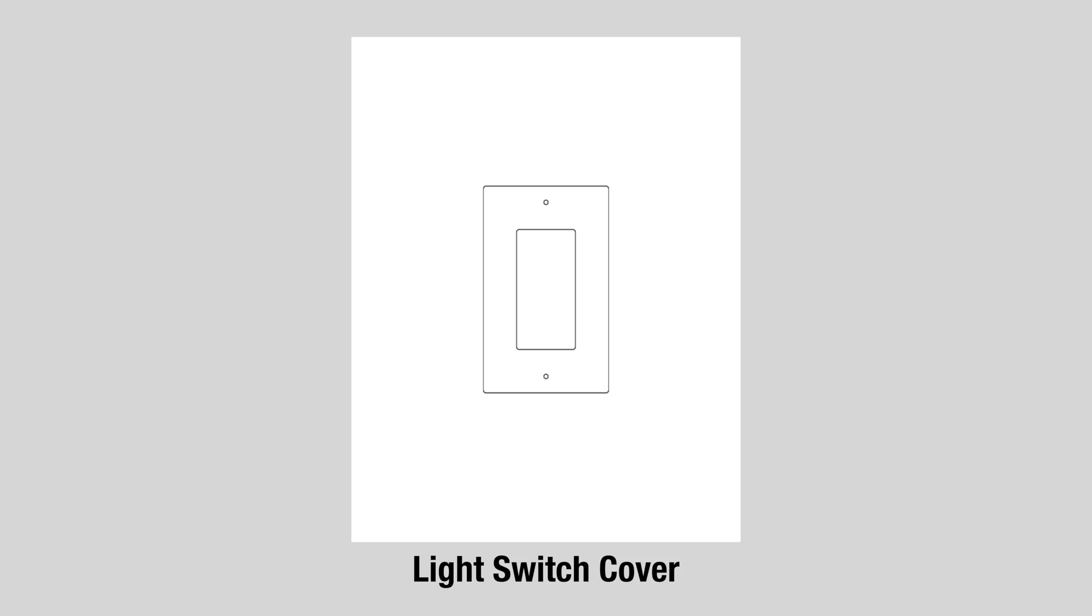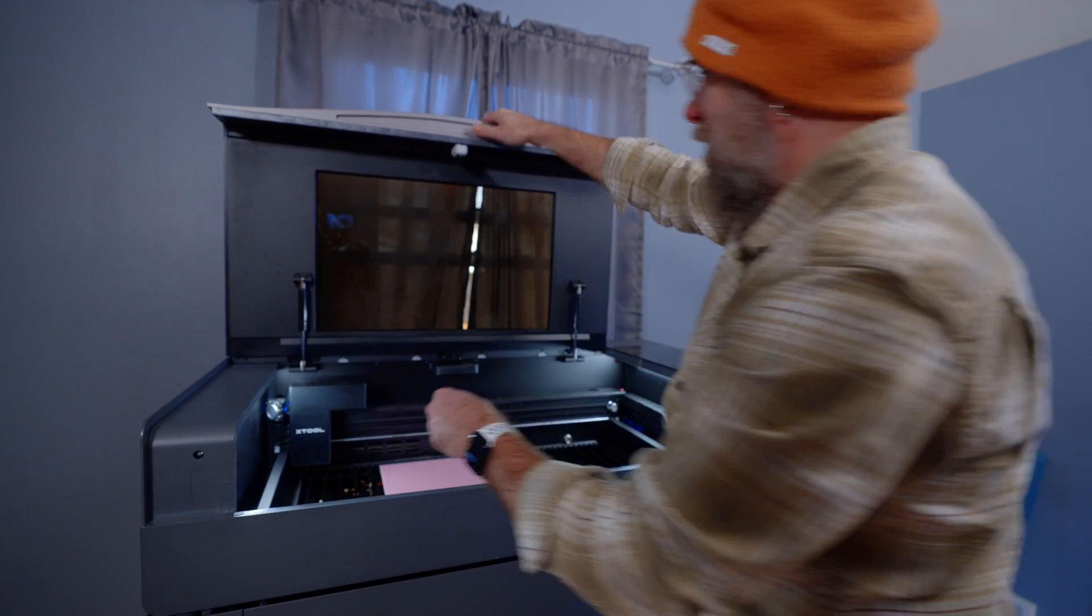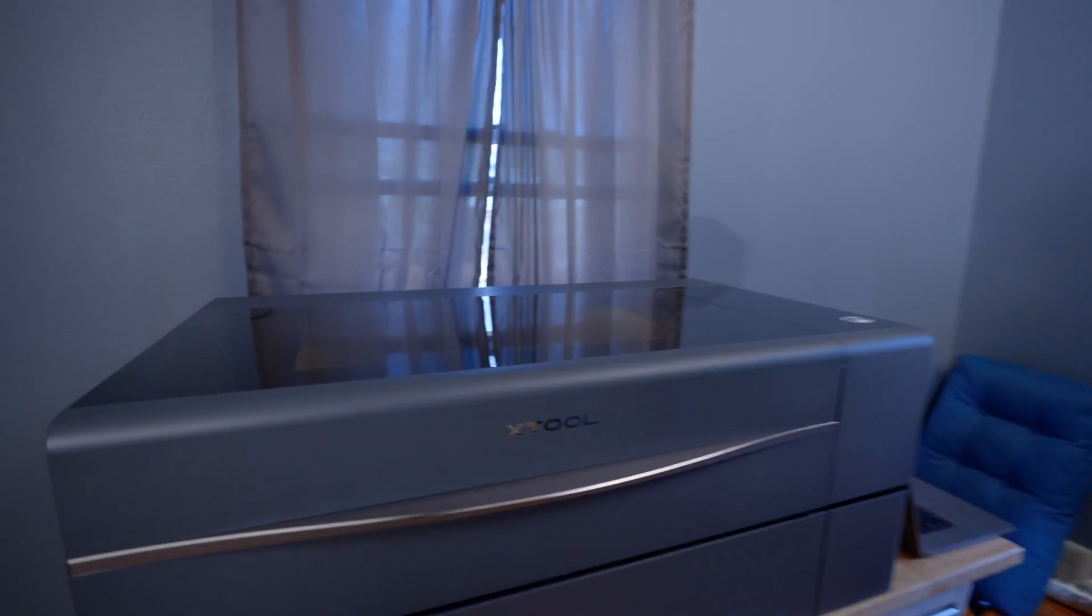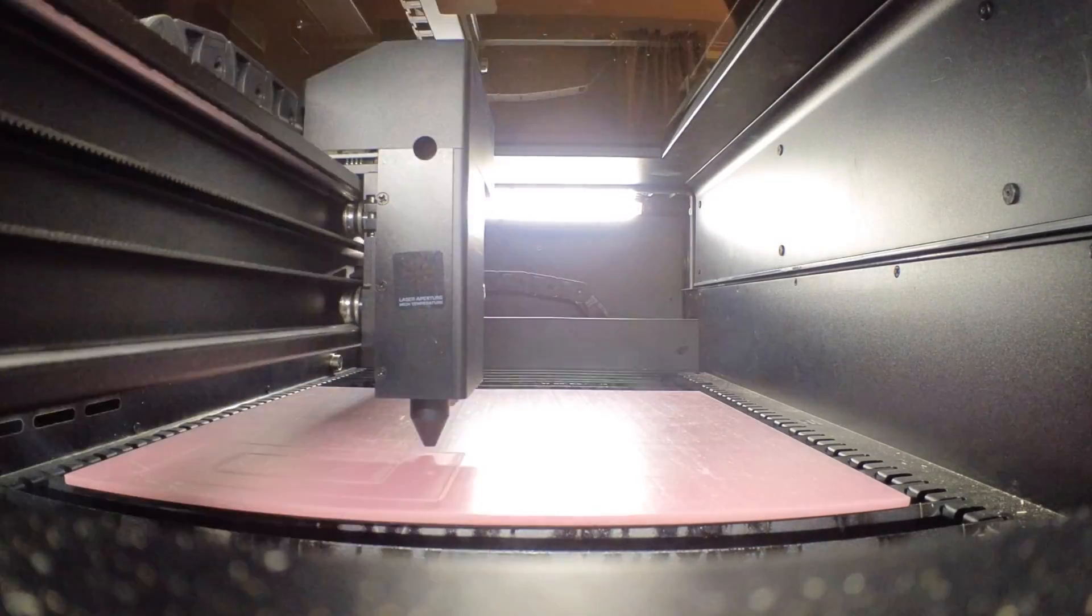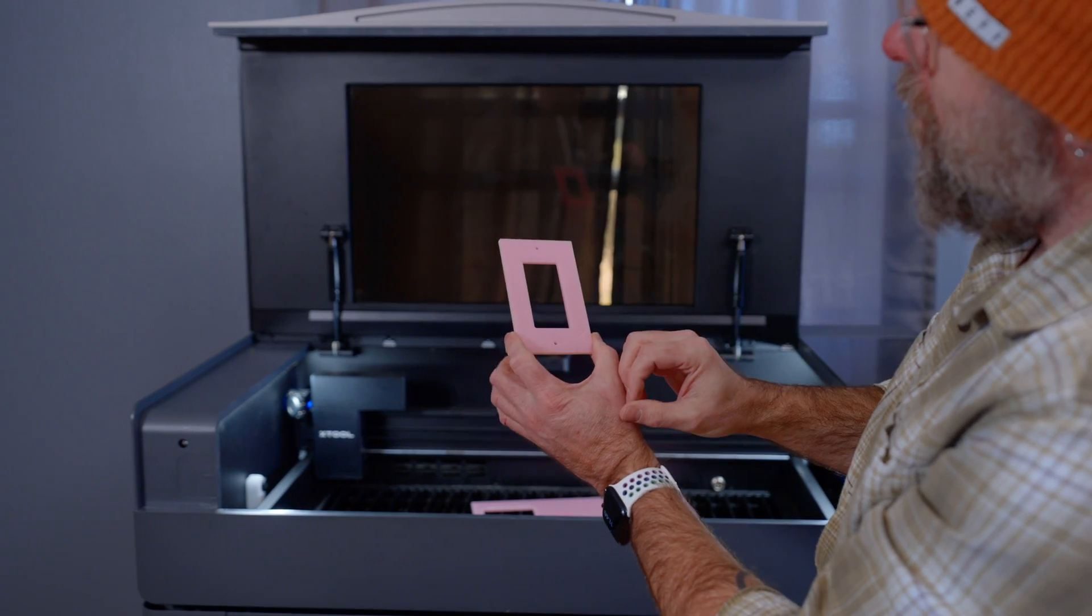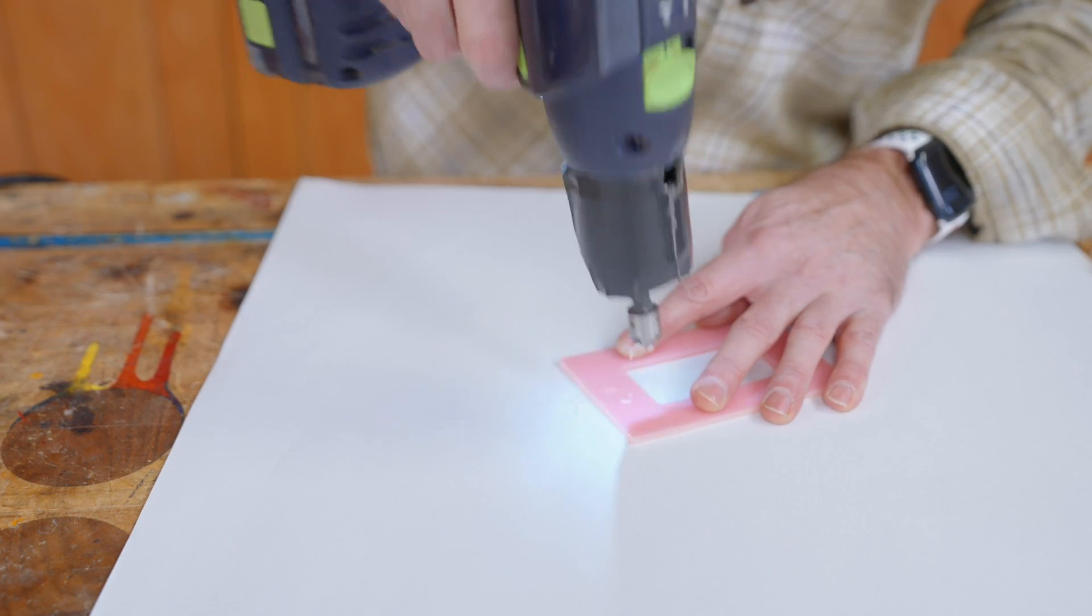Light switch cover. Let's use pink for this. Throw that in there and cut. All we've got to do with this is peel off that protective cover and then countersink these two holes for the screws.